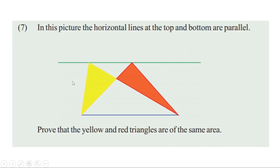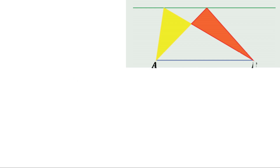Next problem. In this picture the horizontal lines at the top and bottom are parallel. Prove that the yellow and red triangles are of the same area. Let us look at the figure and give a name. It is given that these two lines are parallel, and we have to prove that the areas of these two triangles are equal.